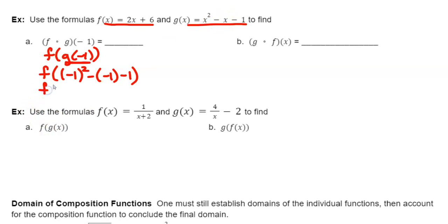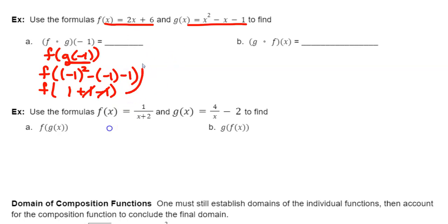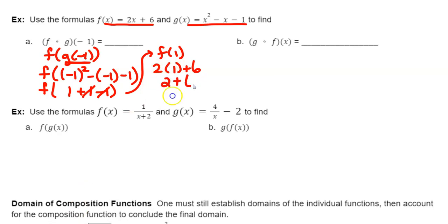By order of operations, do exponents first: negative 1 squared equals positive 1. The double negative becomes a plus 1, and then minus 1. So 1 plus 1 minus 1 — the 1 and negative 1 cancel out, leaving 1. So g of negative 1 equals 1. Now plug that into the f function: 2 times 1 plus 6. Multiply first: 2 plus 6 gives a final answer of 8.